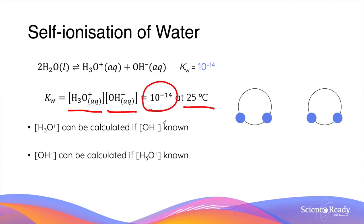This equation helps us calculate the concentration of one of these ions when the concentration of the other ion is known. For example, hydronium ion concentration can be calculated if you know the concentration of hydroxide ion.